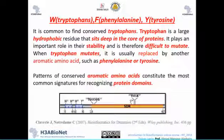For example, tryptophan, phenylalanine, and tyrosine are all hydrophobic, and these hydrophobic residues sit deep in the core of proteins, responsible for protein stability. They are difficult to mutate, and any mutation in these hydrophobic amino acids can cause big trouble for the protein. When tryptophan mutates it is typically replaced by another aromatic amino acid such as phenylalanine or tyrosine. This pattern of aromatic amino acids can be a common signature to recognize protein domains.